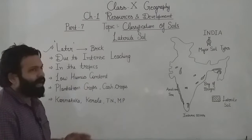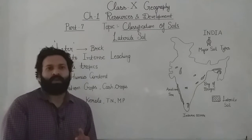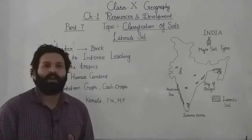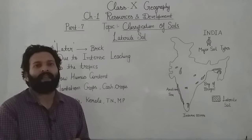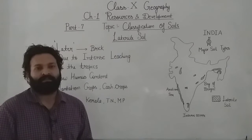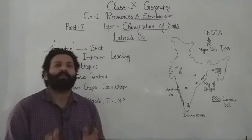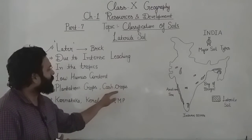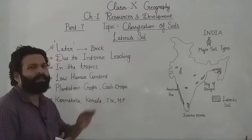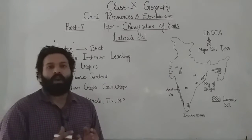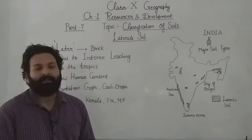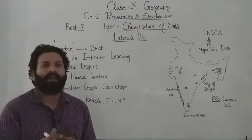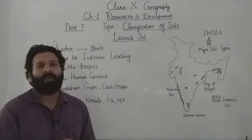This soil can be cultivated but only after treatment — after using manures and fertilizers. The crops grown on this soil are plantation crops and cash crops. Cash crops are crops grown for sale, for commercial purposes — not for family needs or domestic consumption.